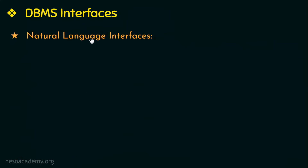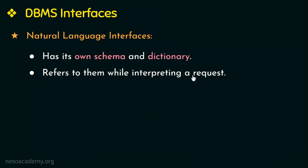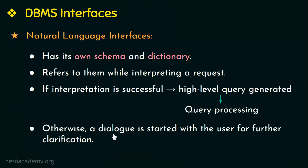Next we have natural language interfaces. These interfaces accept requests in natural languages like English and try to understand them using their own schema and dictionary of important words. A natural language interface refers to these while interpreting a request. If interpretation is successful, a high-level query is generated and submitted to the DBMS. If interpretation is not successful, a dialogue is started with the user for further clarification.